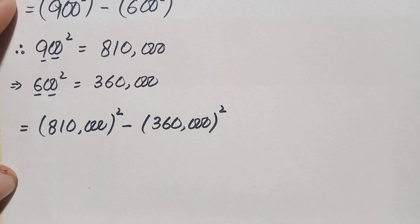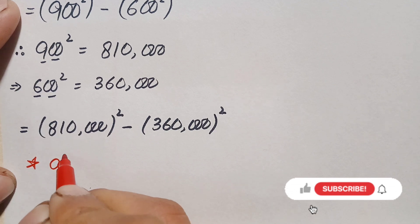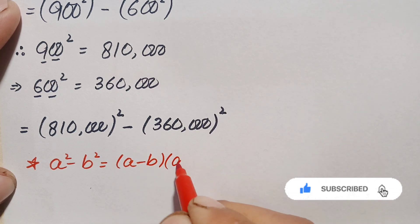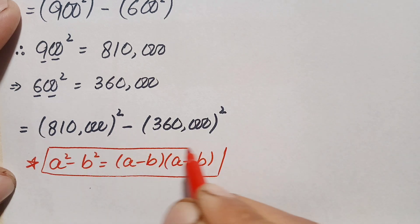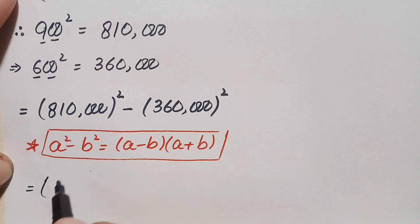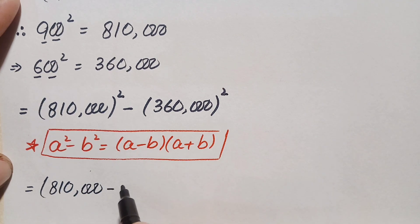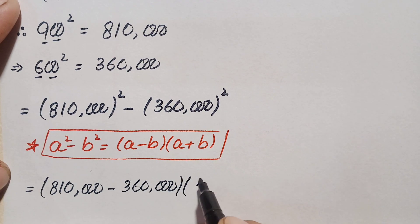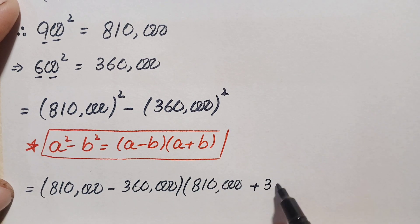Now we will use the algebraic identity a squared minus b squared, which equals (a minus b) times (a plus b). Using this identity, we can write the expression as (a minus b) times (a plus b), where a is 810,000 and b is 360,000. So this becomes (810,000 minus 360,000) times (810,000 plus 360,000).